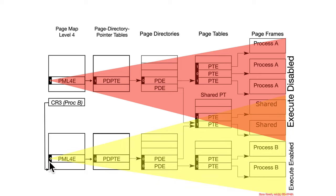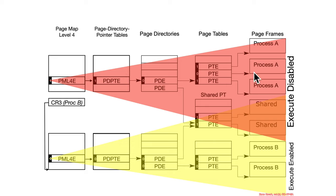If the execute-disable bit is 0 at the top level, you keep walking down — 0, 0, 0, okay this should be executable — until you encounter a 1, at which point that entry is not executable. Basically, the most restrictive setting at the highest level affects all downstream entries. So if you ultimately want pages to be executable, it should be the last levels of translation which are set as non-executable, not the higher ones.